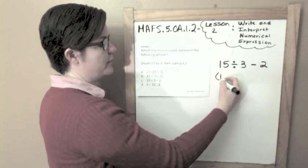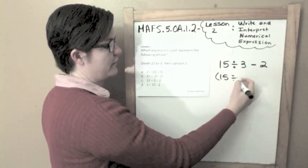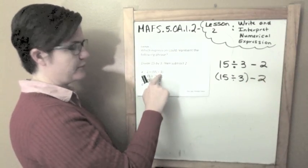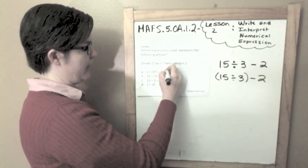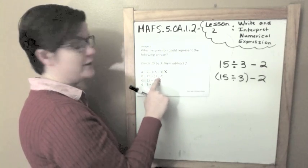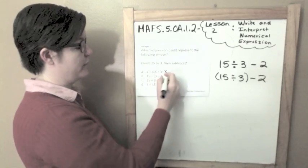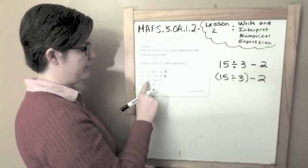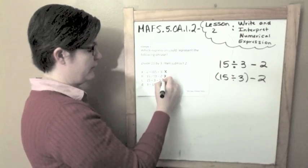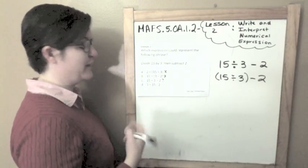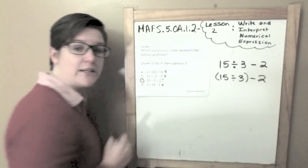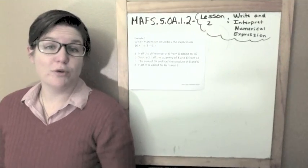I could write it like this. I could also, because my first step was to divide by 3, it could also be written like this. This does not match A: 15 divided by and then in parentheses 3 minus 2, that would be subtracting 2 from 3 first. 15 divided by 3 minus 2, that matches over here. C is our answer, moving right along to example 2.